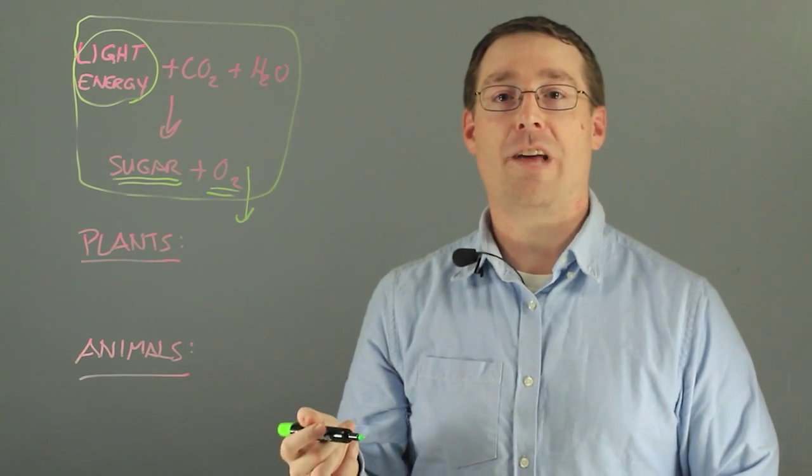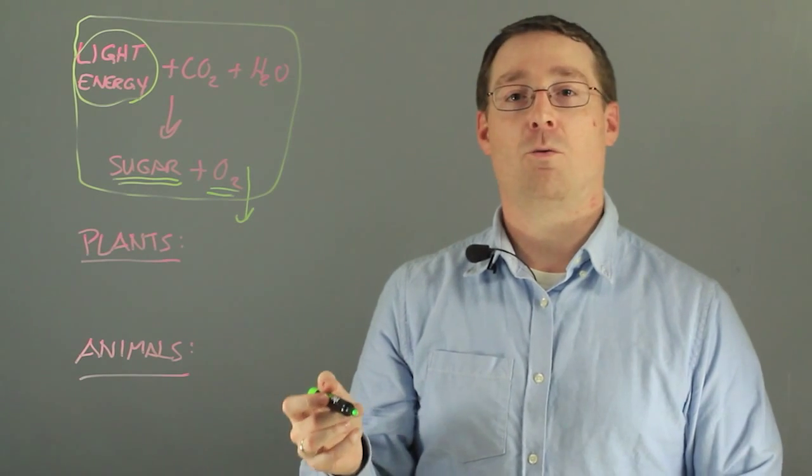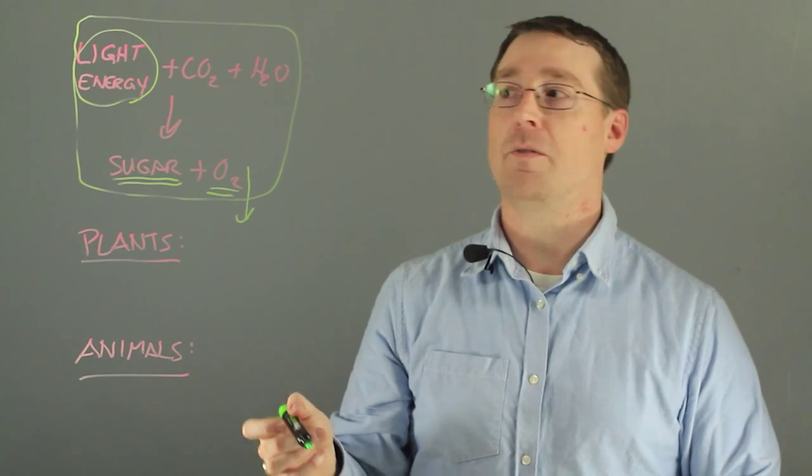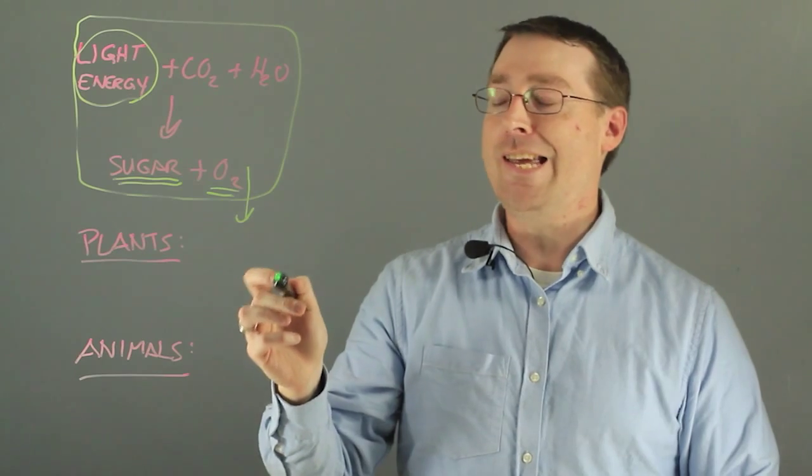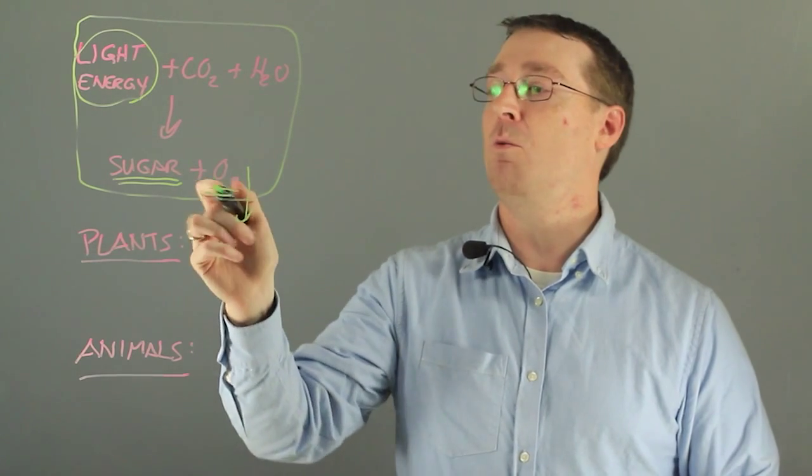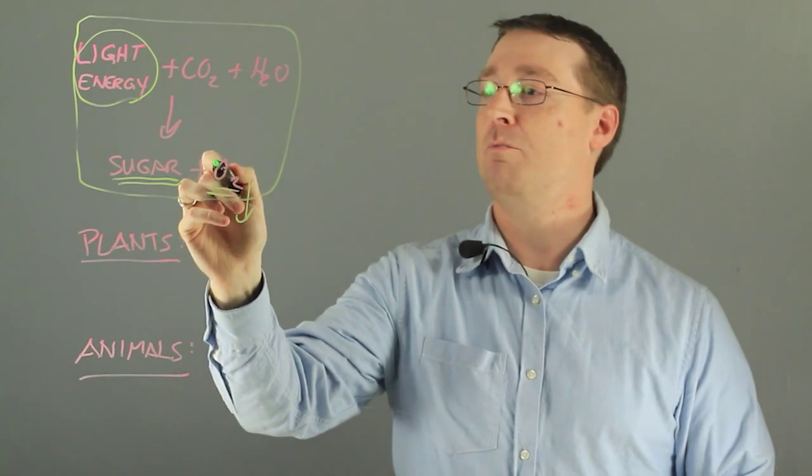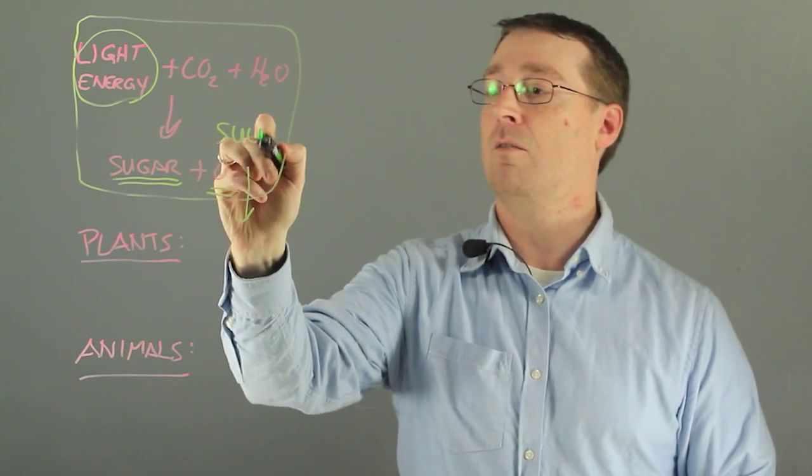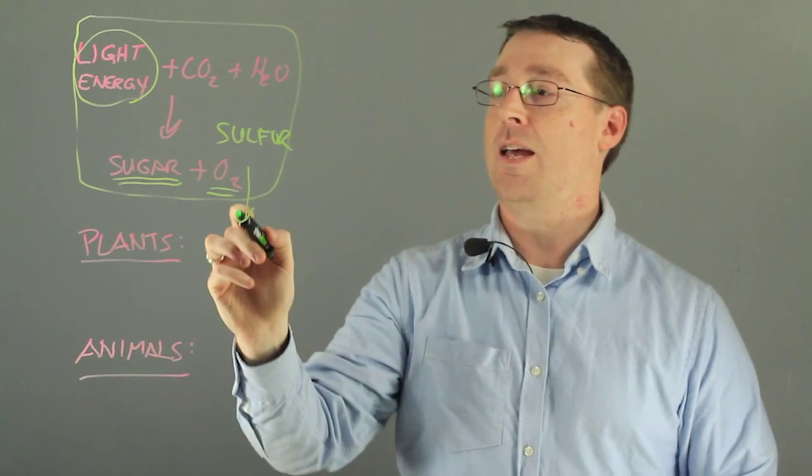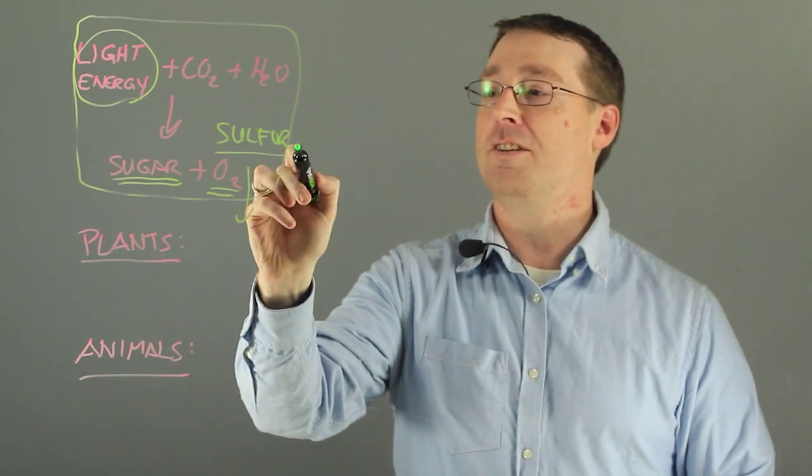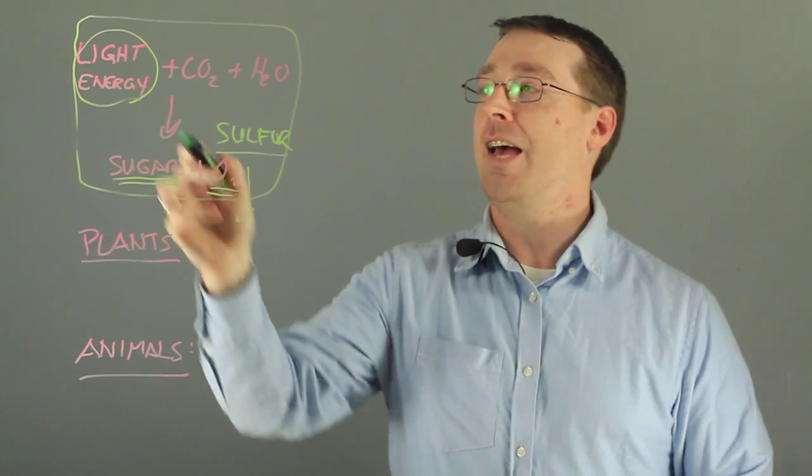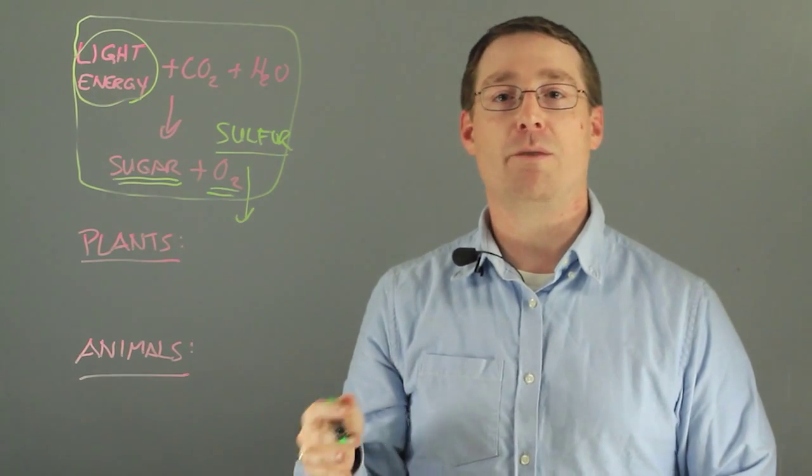Now the first evidence of photosynthesis was around two billion years ago, and in those bacteria, they did not convert CO2 into oxygen but rather sulfur. And sulfur was released into the atmosphere and the light energy was not visible light but near infrared.